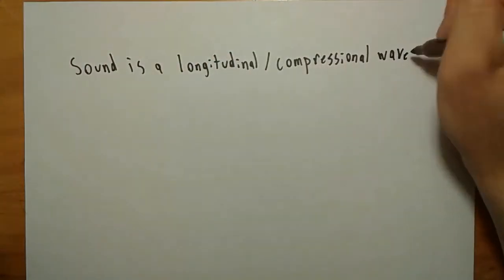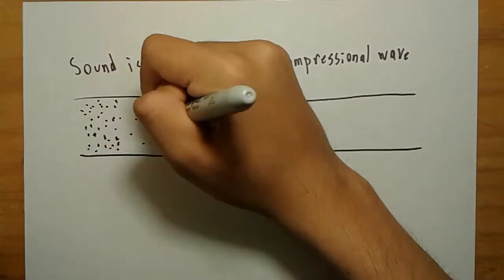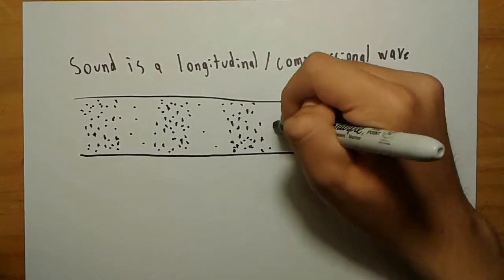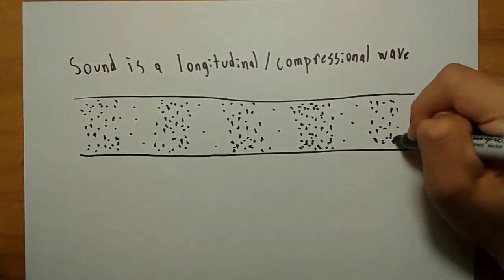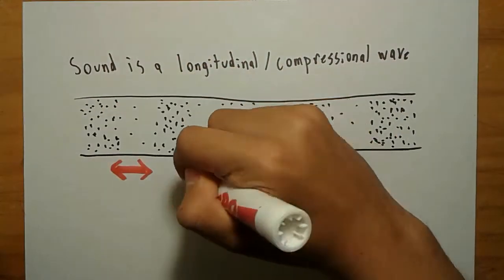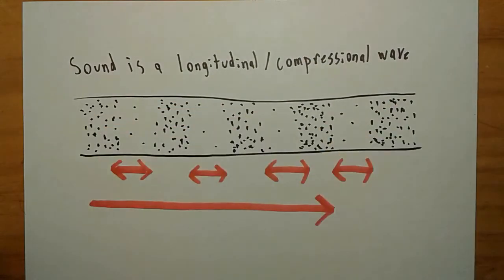The sound produced by musical instruments is a longitudinal or compressional wave, meaning the wave's medium, in this case air, as demonstrated by the dots, compresses and expands in the same direction as the wave propagates or moves.